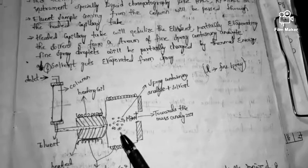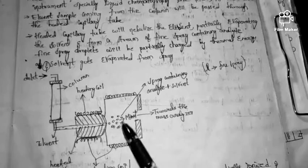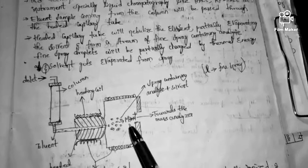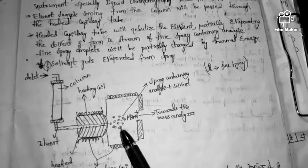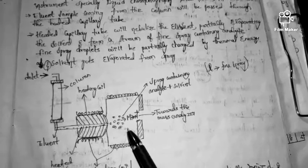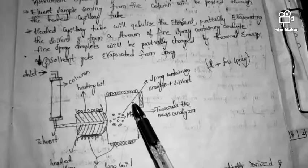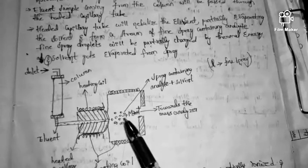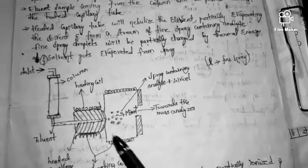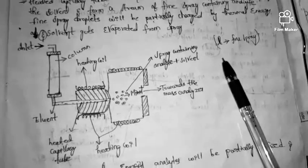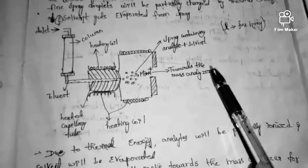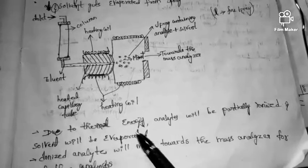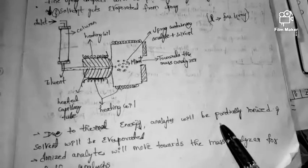These fine spray droplets are partially charged by thermal energy. The solvent then evaporates from the spray, and the analytes will move towards the mass analyzer. Due to thermal energy, the analytes will be partially ionized.